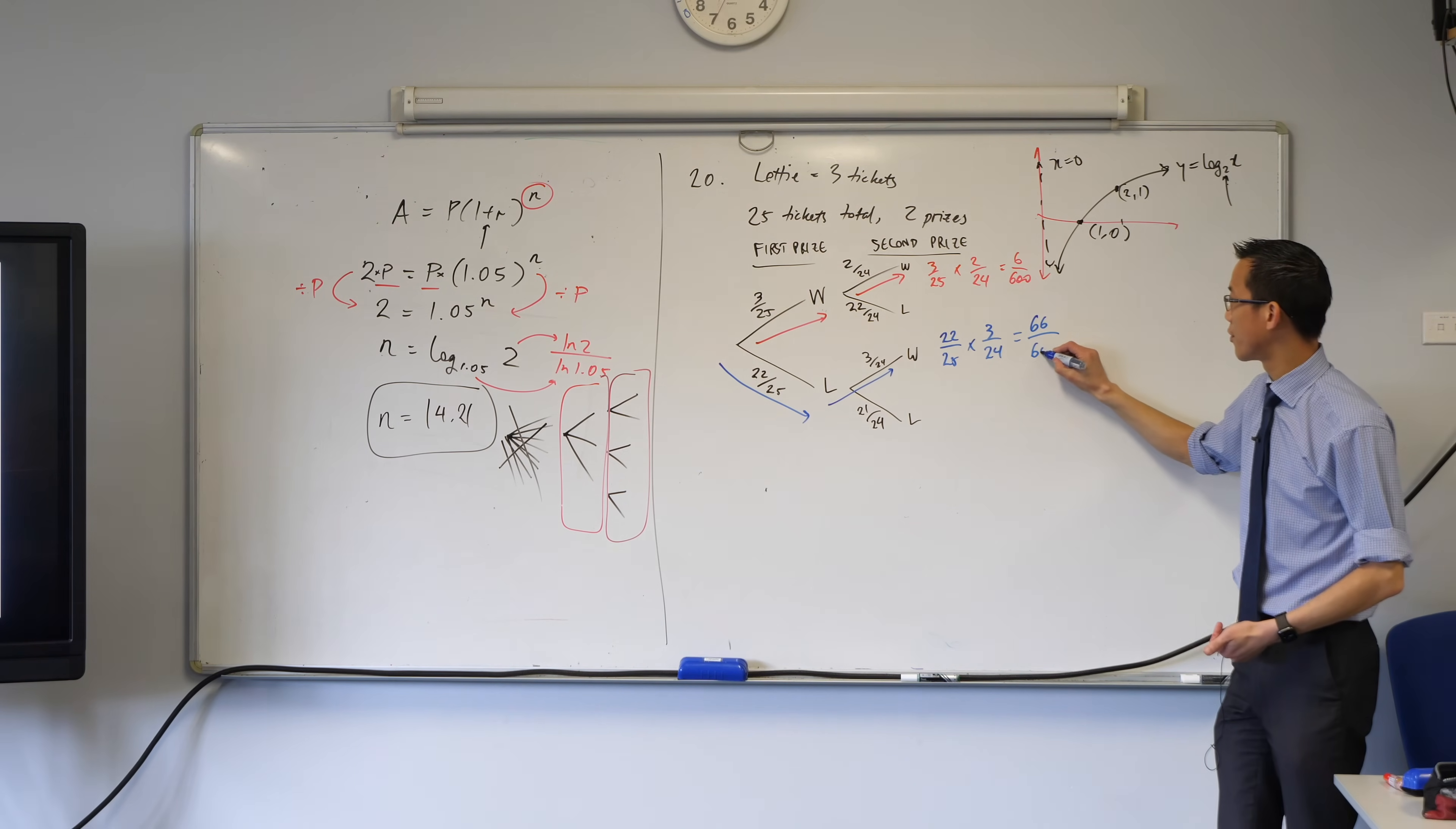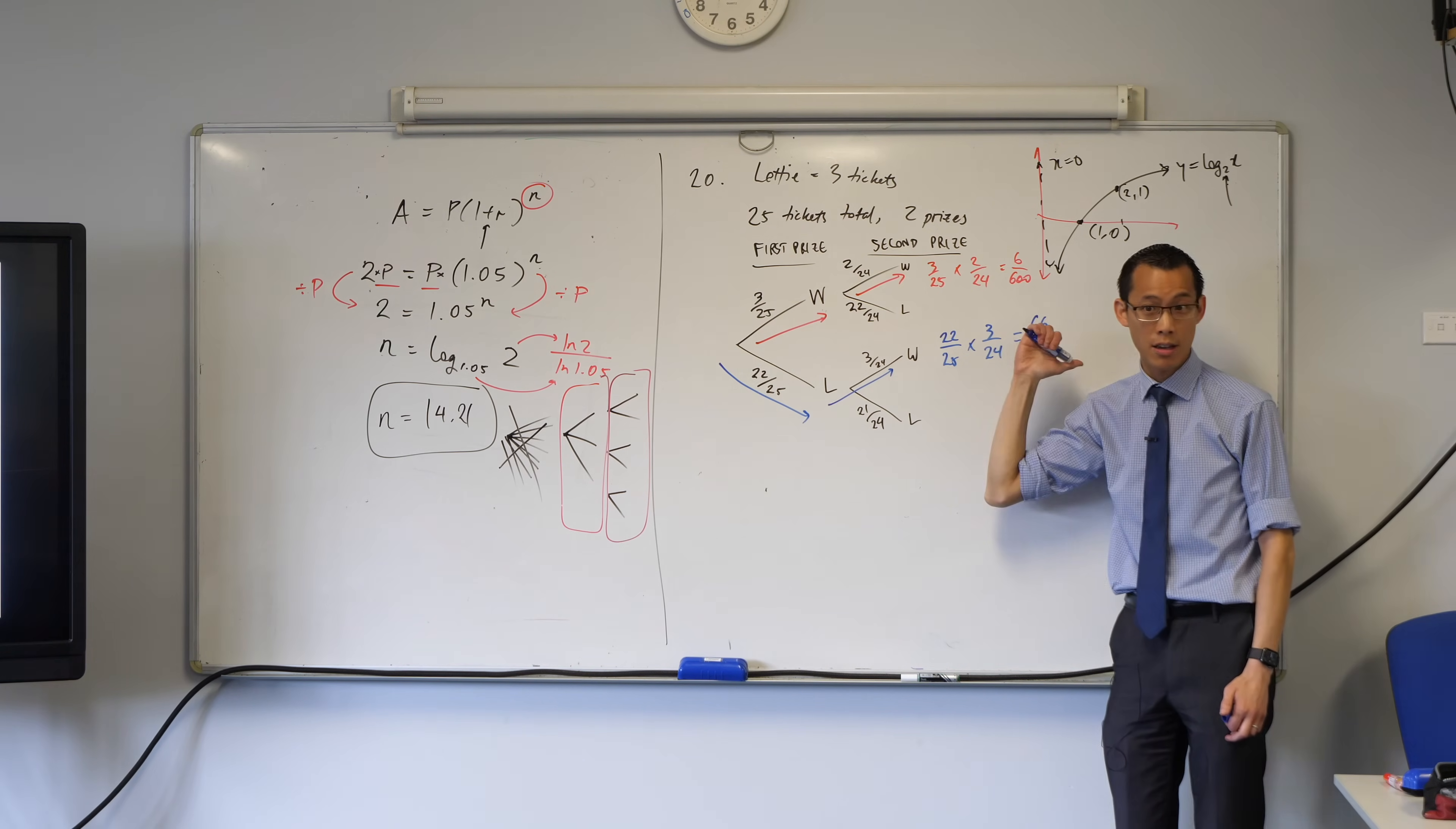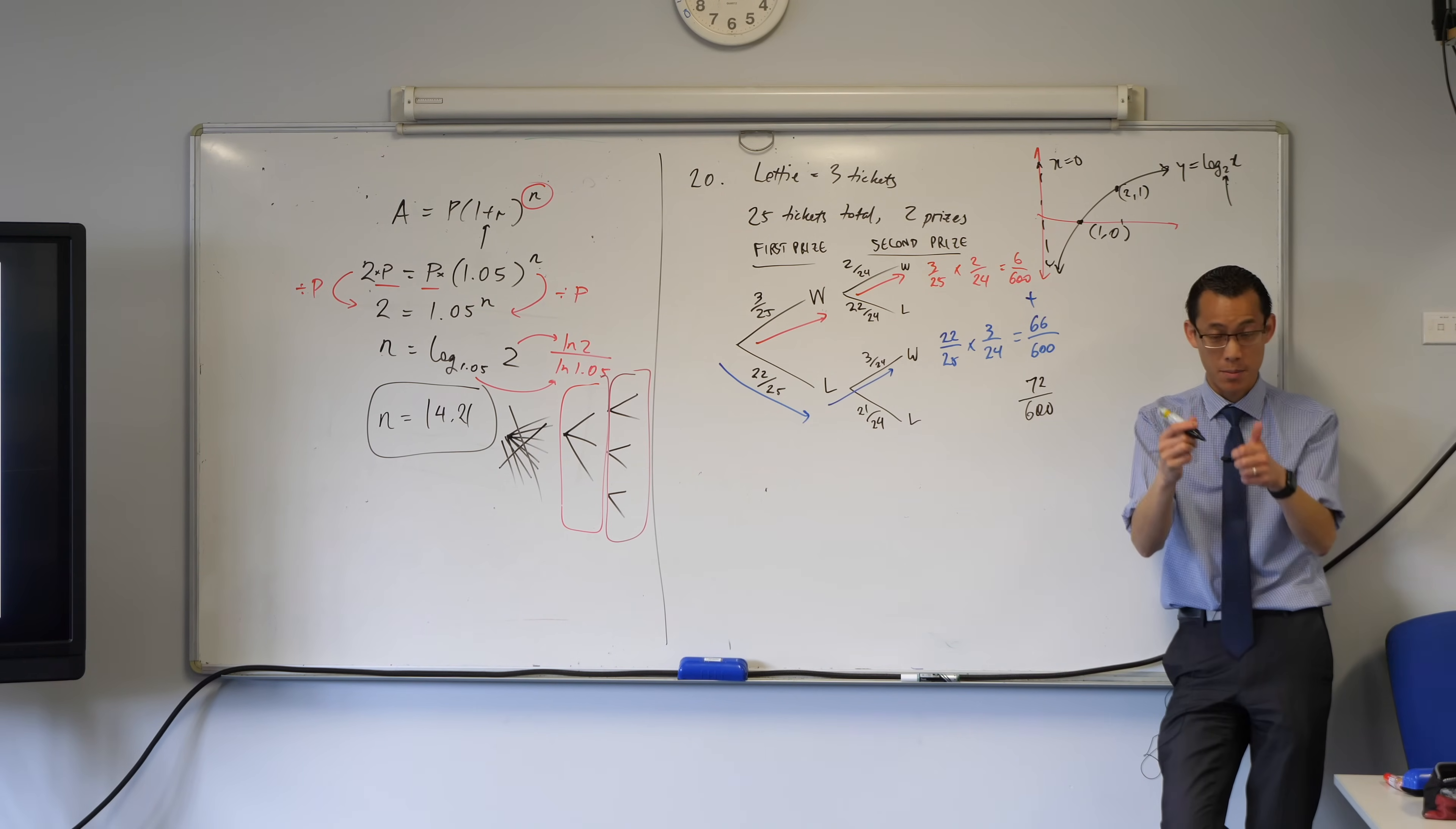That's 66 out of 600. Is that okay? So, now, either of these are fine. So, you know how we multiplied to cross, to go across here? Well, I add to go down, like so. So, that gives me 72 out of 600, which I hope is 3 out of 25. Thumbs up.